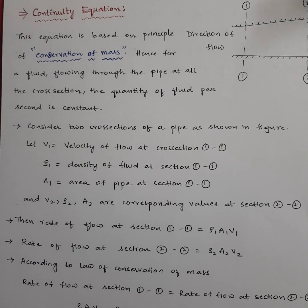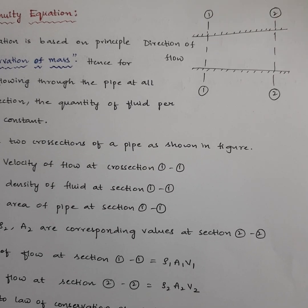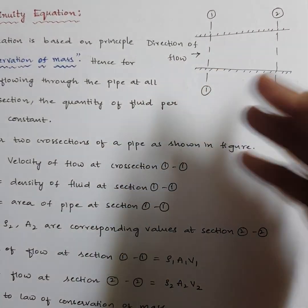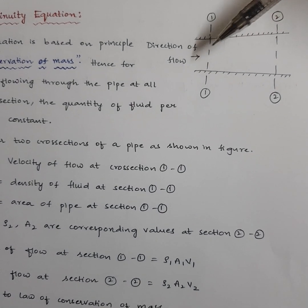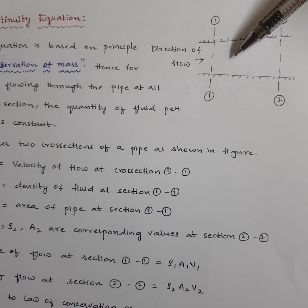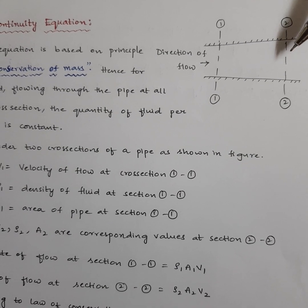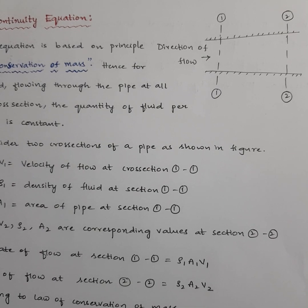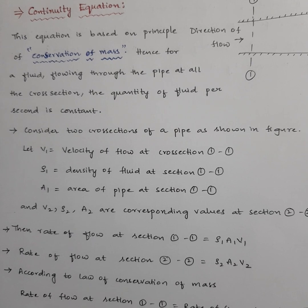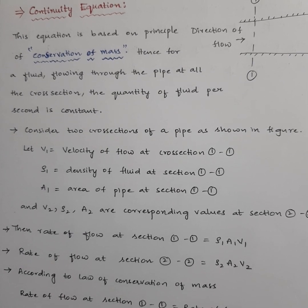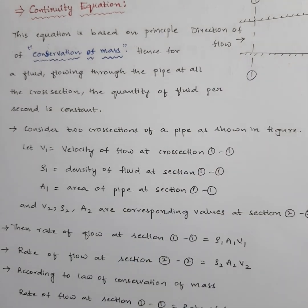According to the figure, we have two sections: section 1 and section 2. This is the direction of flow — water or any liquid is flowing from left to right. According to the law of conservation of mass, whatever fluid enters through section 1 should equal the quantity leaving through section 2. V1 is the velocity at section 1, rho 1 is the density at section 1, and A1 is the cross-sectional area of the pipe at section 1.